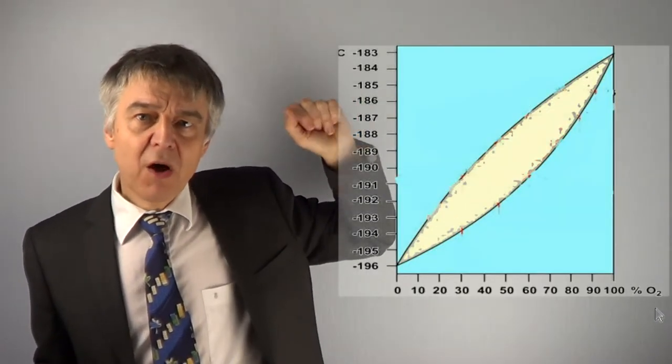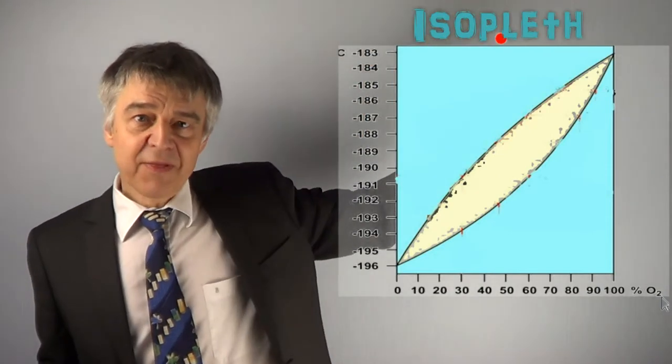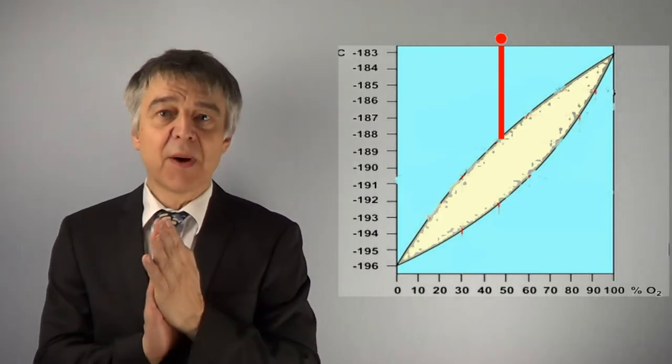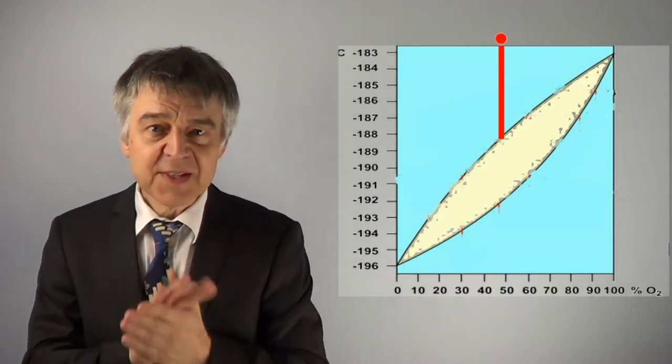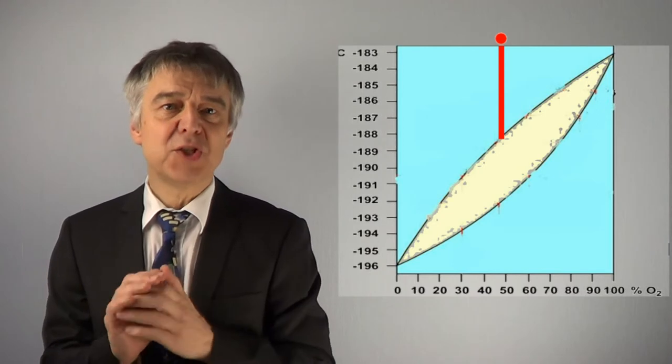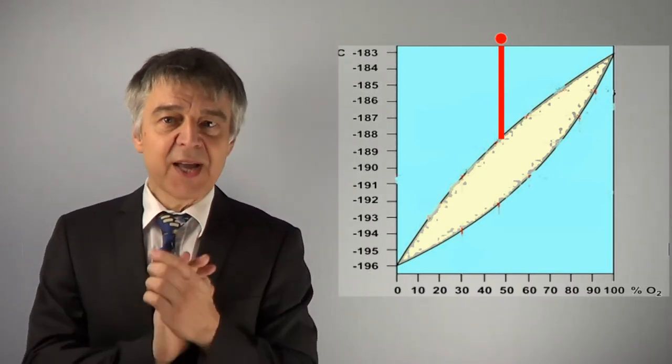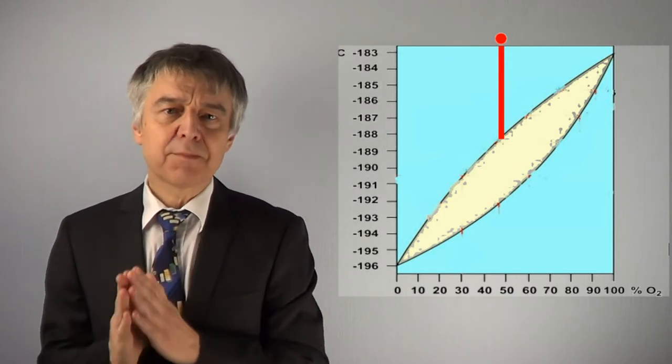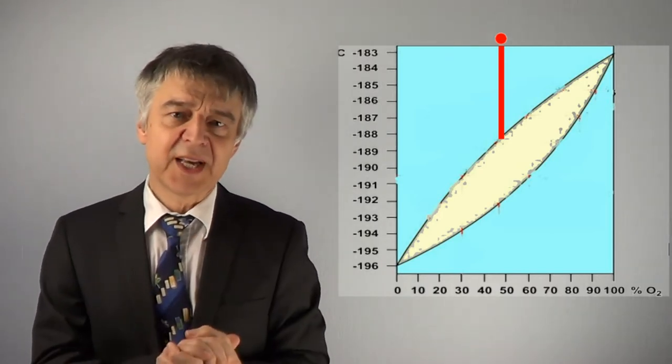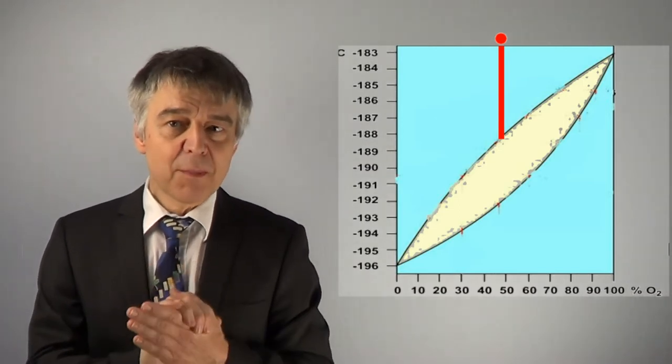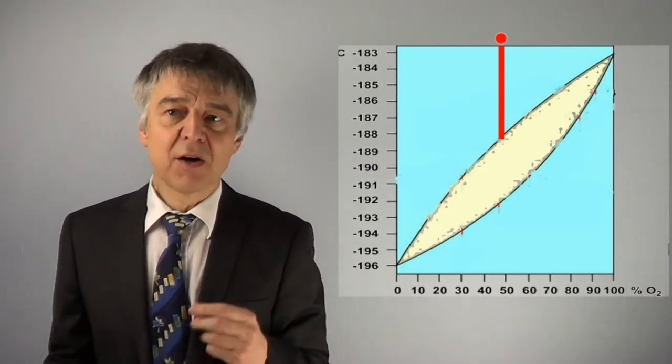We move along an isoplet downwards to lower temperatures until we intersect a binodal. In this case, the binodal is a dew point curve. This dew line is met at about negative 188 degrees Celsius. Thus, the first liquid droplets, that dew drops, condense here.